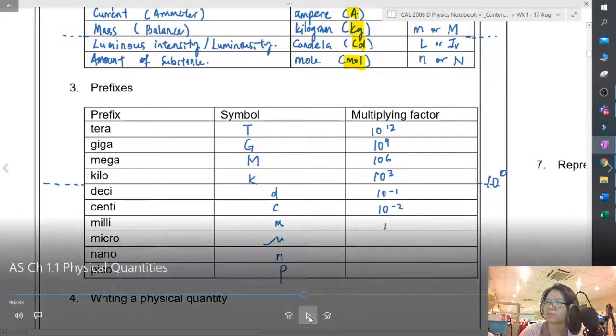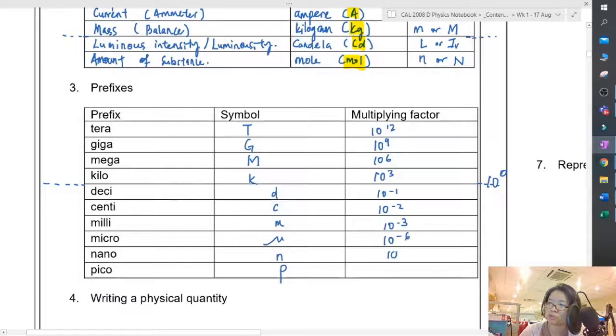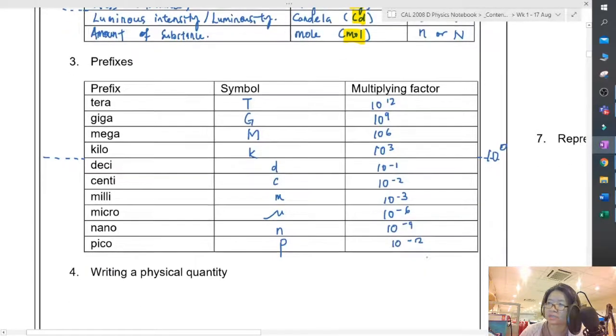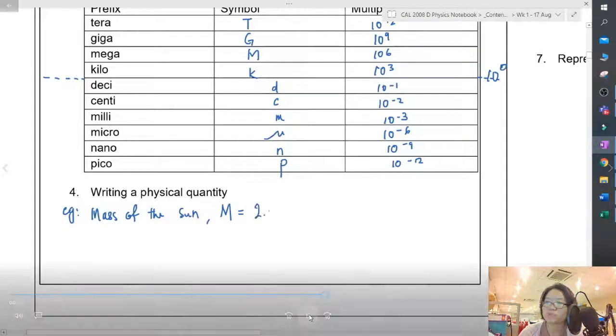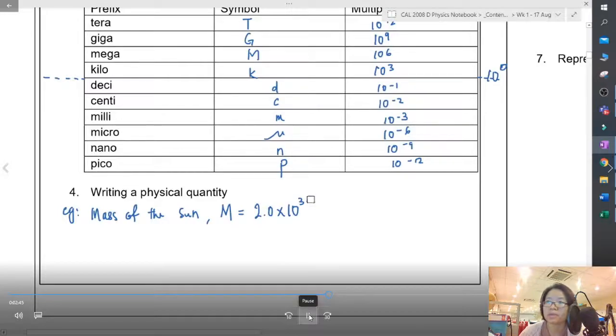These few ones are a bit special: negative one, negative two, because centi is divided by 100. But after that, we again go up to three, six, nine, and twelve.